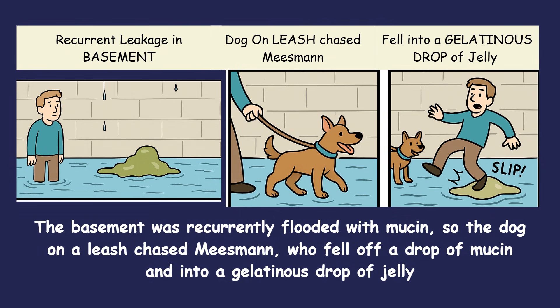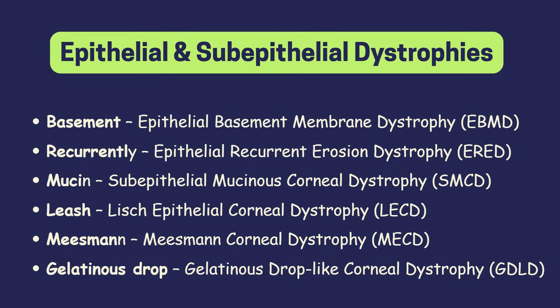Here's a simple visual story to remember all six epithelial-subepithelial corneal dystrophies. Imagine a man named Meesmann walking in a basement that is recurrently flooded with sticky mucin. There's a dog on a leash — Lisch — that chases Meesmann, who slips and falls into a gelatinous drop of jelly. Basement → epithelial basement membrane dystrophy; recurrent → epithelial recurrent erosion dystrophy; mucin → subepithelial mucinous dystrophy; Lisch → Lisch epithelial dystrophy; Meesmann → Meesmann's dystrophy; gelatinous drop → gelatinous drop-like dystrophy.